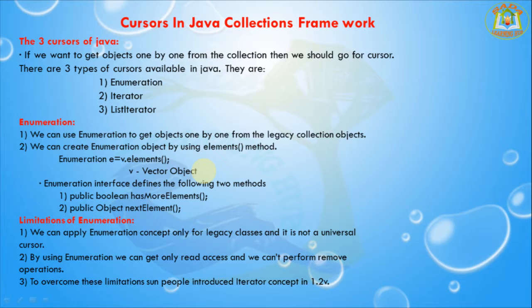There are some limitations in Enumeration. We can apply the Enumeration concept only for legacy classes — it is not a universal cursor. Also, by using Enumeration we can get only read access; we cannot perform remove operations. It is not possible to delete elements from the collection object — only reading elements is possible. To overcome these limitations, the Iterator concept was introduced.